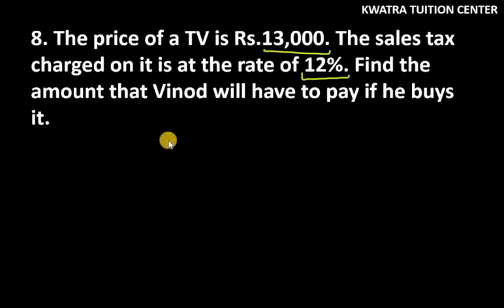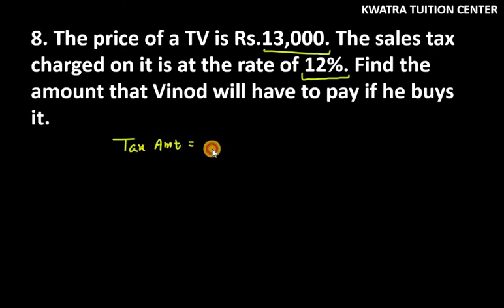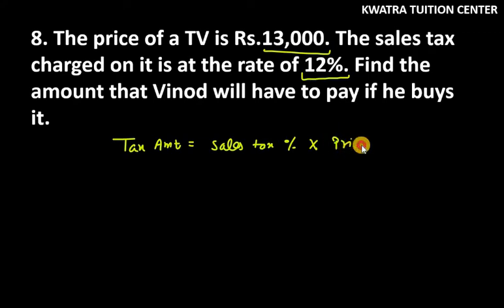The price of the TV is 13,000. The sales tax rate is 12%. The formula for tax amount is: sales tax = sales tax percentage × price. That is 12% into 13,000, which is 12 over 100 into 13,000.